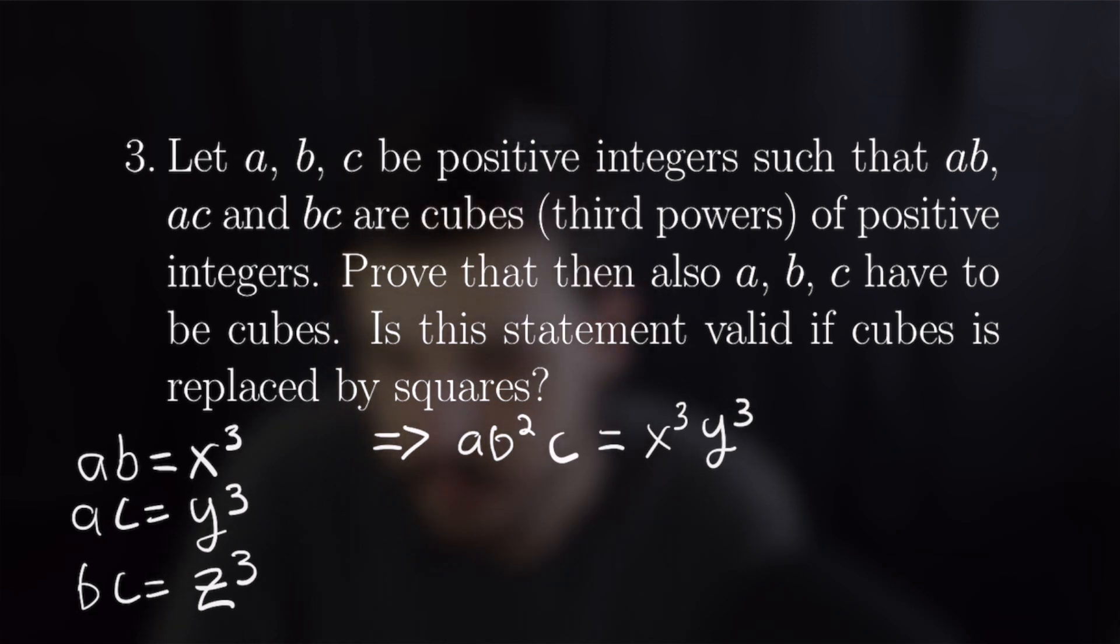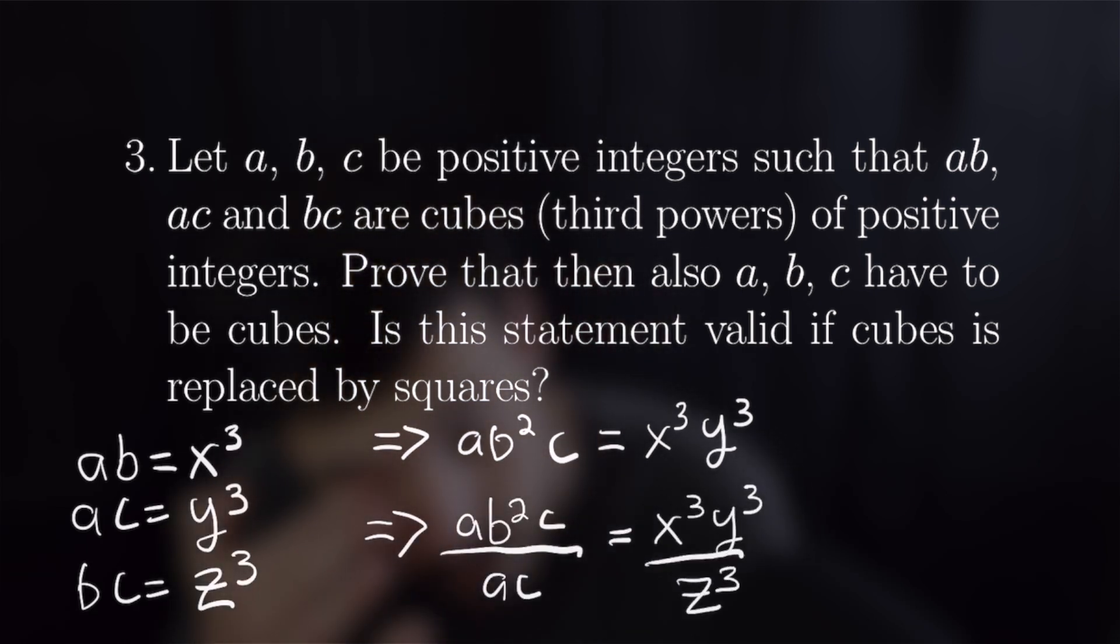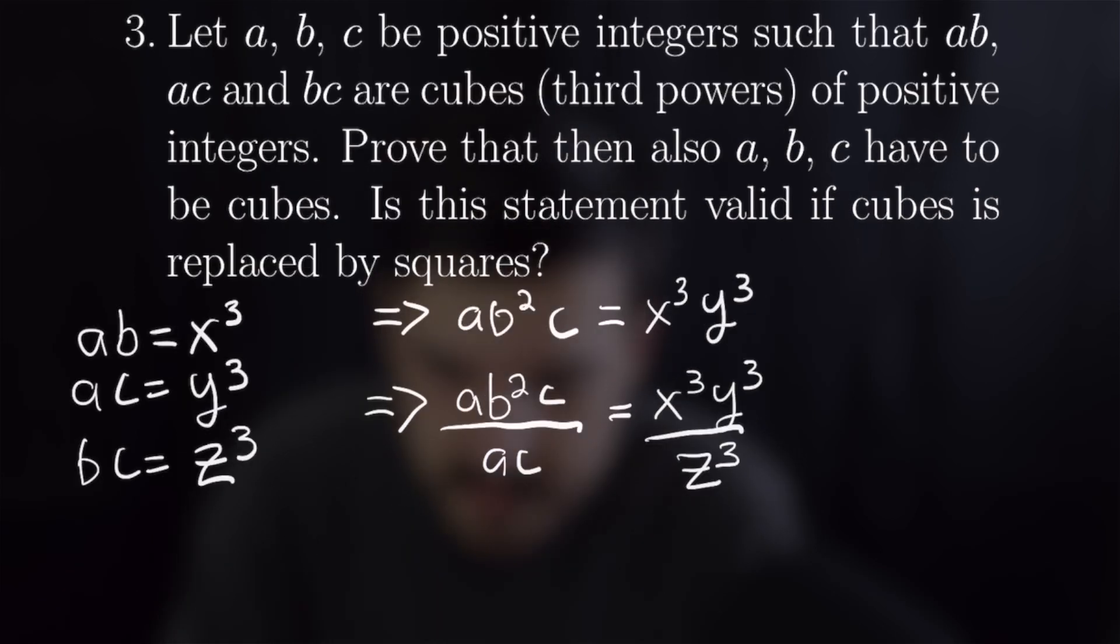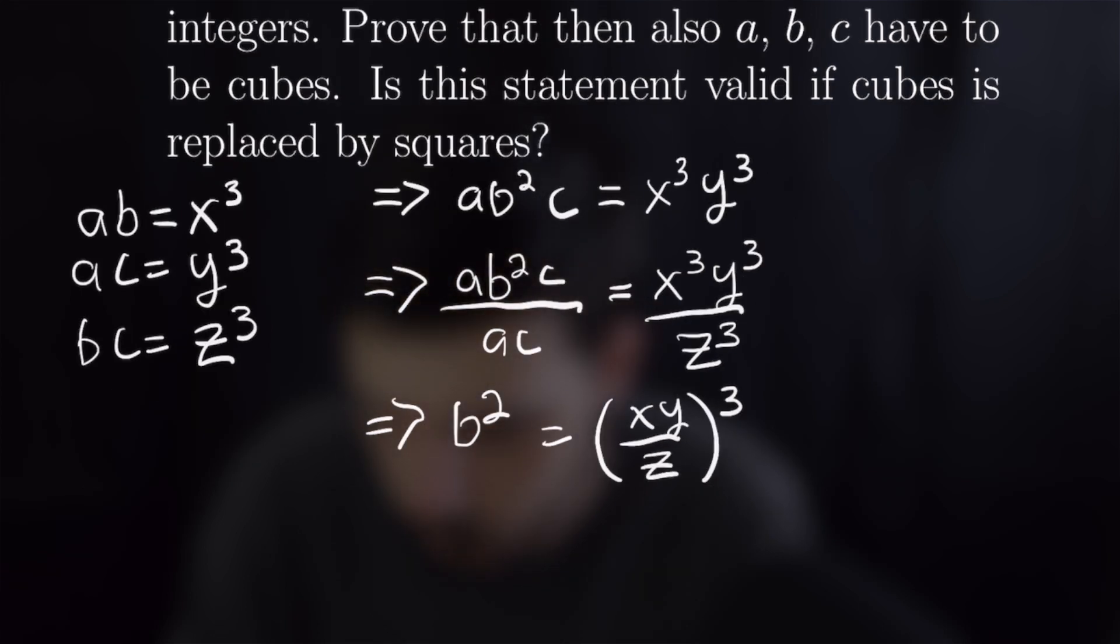And then we are going to divide both sides by ac but on the left we're going to divide by ac and on the right we're going to divide by y cubed which is equal to ac and that gives us the equality b squared is equal to x times z over y quantity cubed.